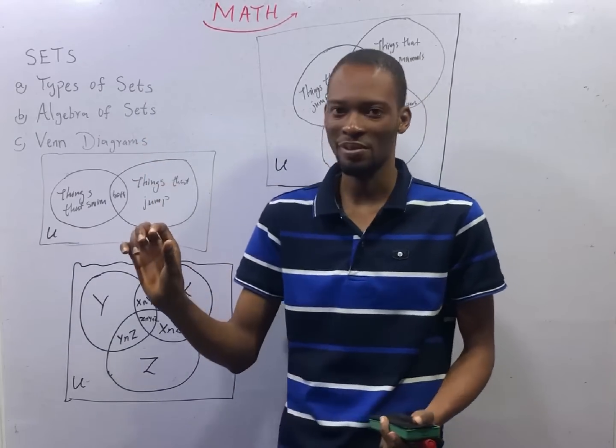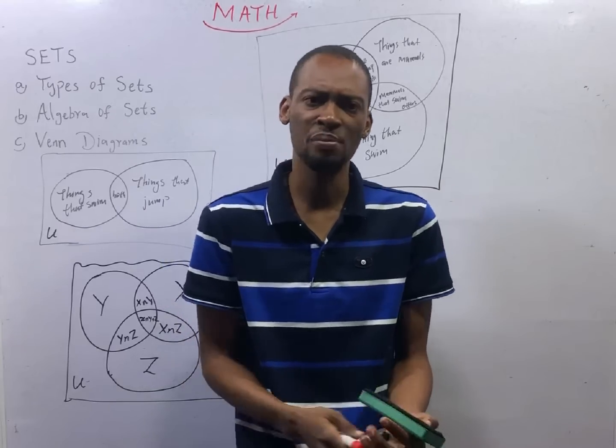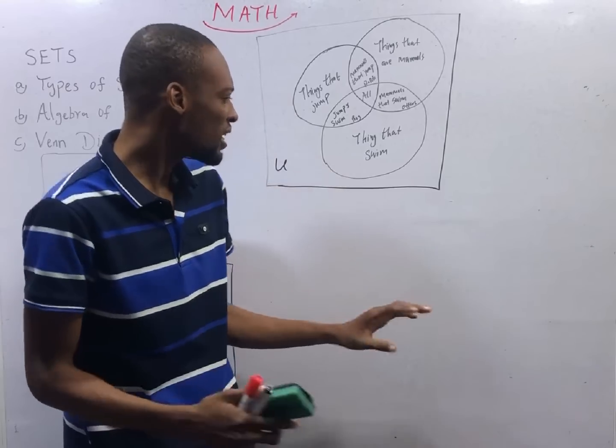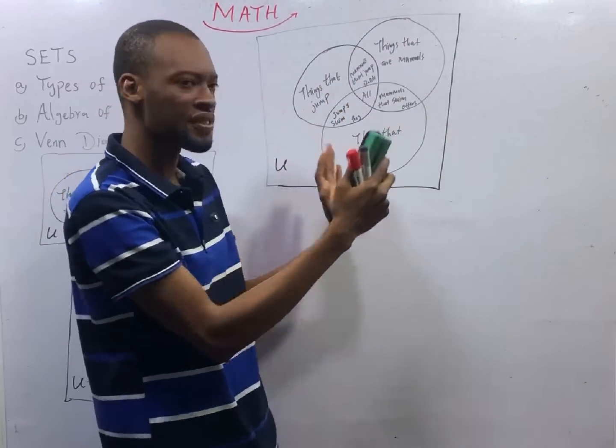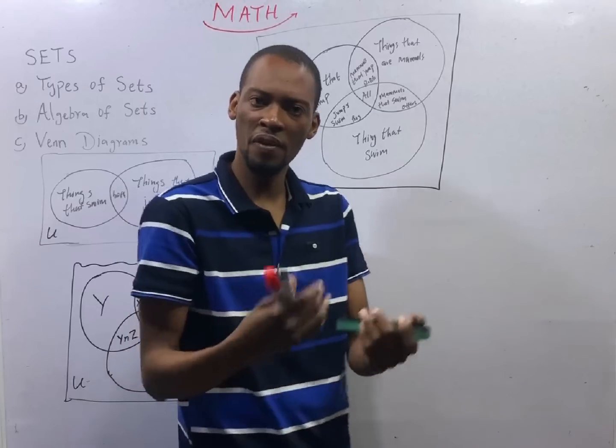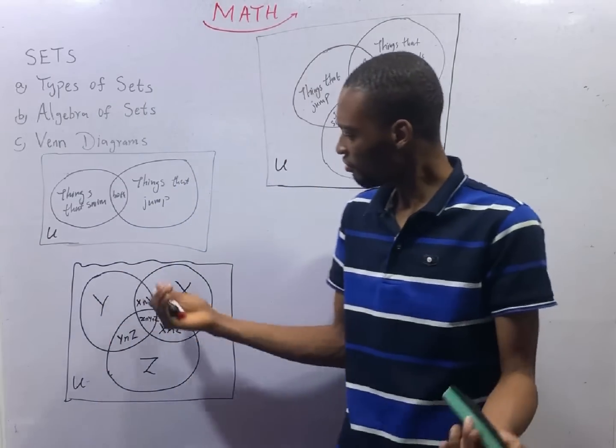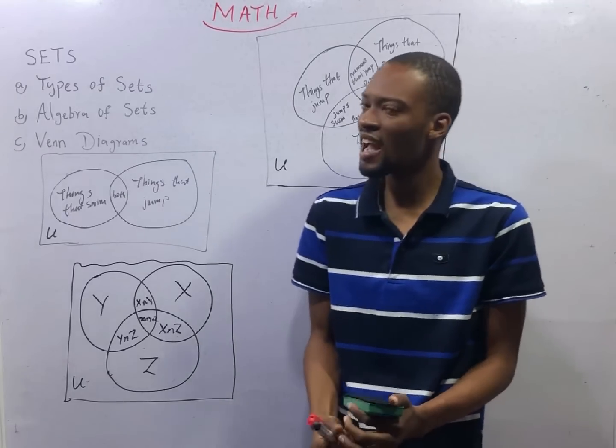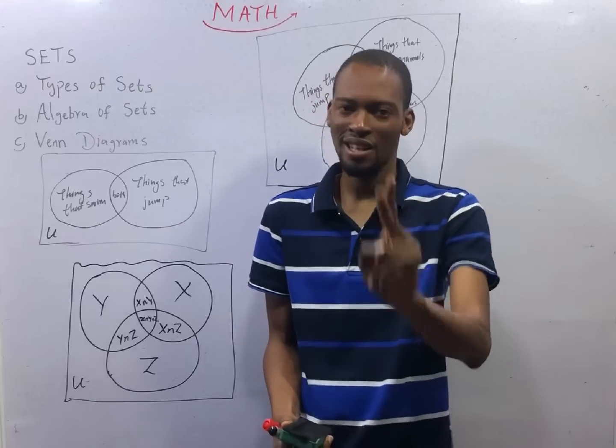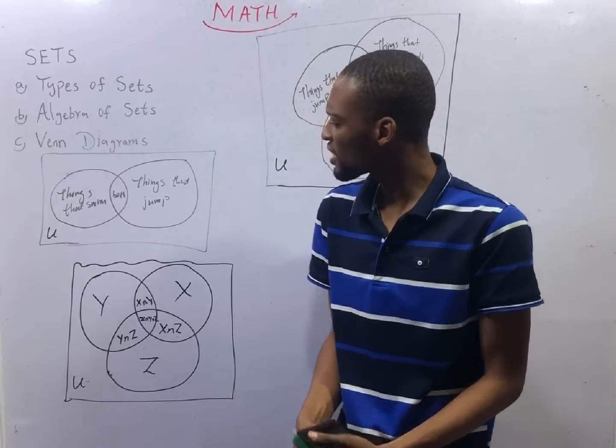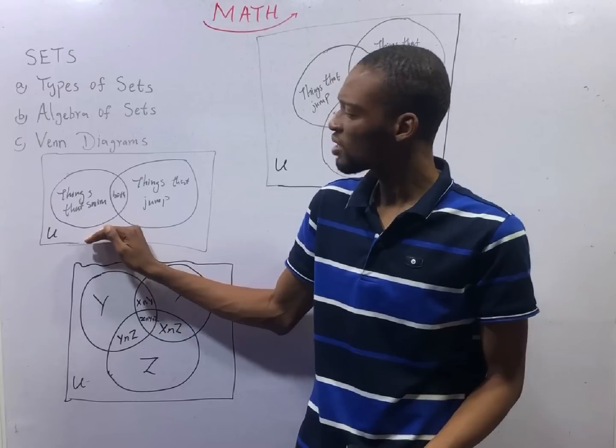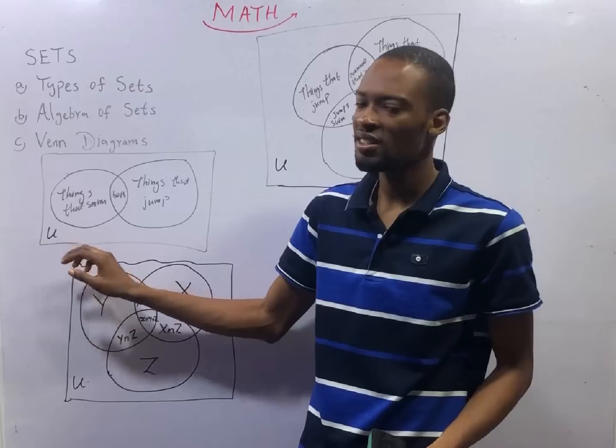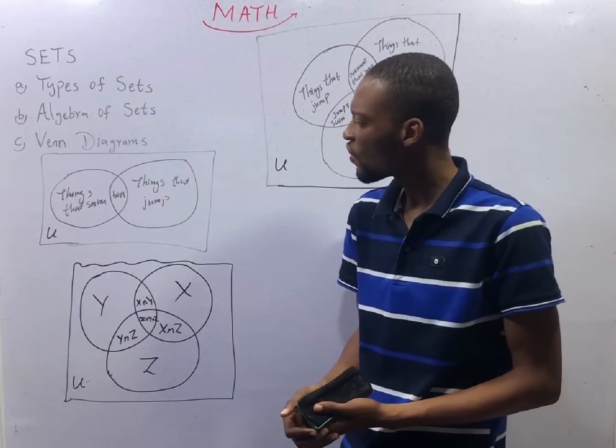Venn Diagrams are diagrams we use to represent sets. It usually have the universal set and a set of circles, depending on the number of sets. JAMB requires you to know how to draw Venn Diagrams for 2 sets and for 3 sets. The big box represents the universal set, the total values present in all the sets.